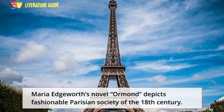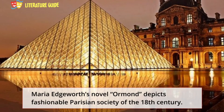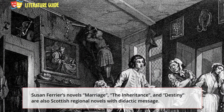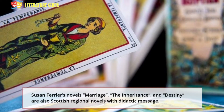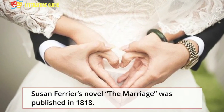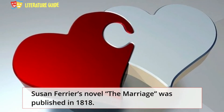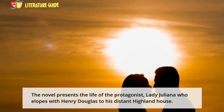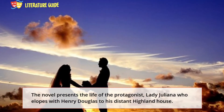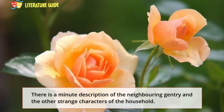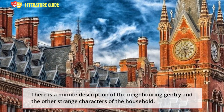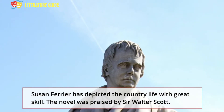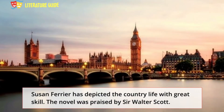Susan Ferrier's novels Marriage, The Inheritance, and Destiny are Scottish regional novels with a didactic message. The Marriage, published in 1818, presents the life of Lady Juliana who elopes with Henry Douglas to his distant Highland house. There is a minute description of the neighbouring gentry and the strange characters of the household. Susan Ferrier has depicted country life with great skill, and the novel was praised by Sir Walter Scott.